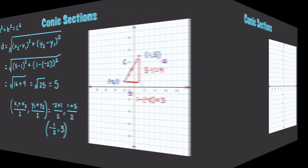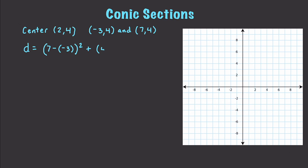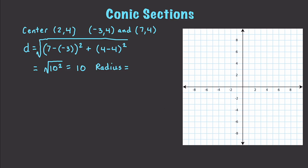Now let's say that we have a circle and its center point is known to be at (2, 4), and say that we also have two additional points being (-3, 4) as well as (7, 4). We're going to be able to calculate our diameter for our circle and also then get the radius. So the diameter is going to work out to be √((7 - (-3))² + (4 - 4)²), which gives us √(10²), which of course cancels out to a final diameter of 10, and then the radius is 10/2, or simply 5.